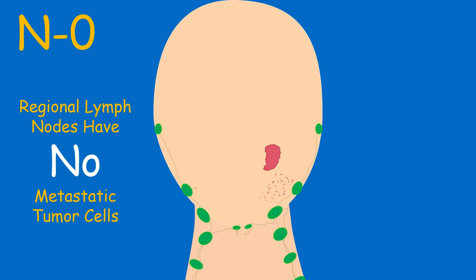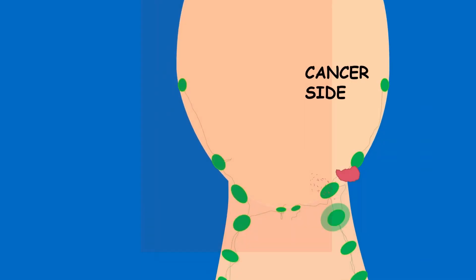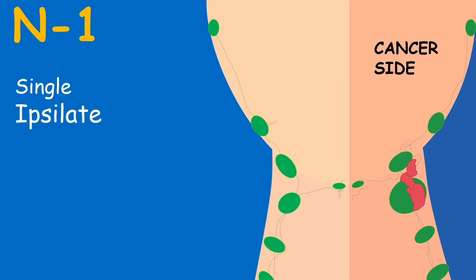This is the cancer side and you may see cancer cells traveling to the regional lymph nodes. In N1, there is a single ipsilateral lymph node involvement which is on the same side as the cancer and is 3 centimeters or less in size.